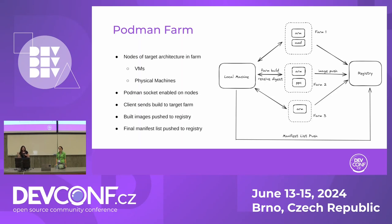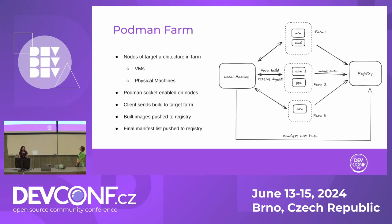There's no need to log into different machines, build the images separately, push them, and then create a manifest list. A farm is just a group of machines — virtual machines, physical machines, EC2 instances — basically any machine that can run Podman and enable that socket. You can have as many or as few farms and nodes as you want. The idea is to have nodes of different architectures so you use native architecture rather than emulate it, which is how you avoid a performance hit.